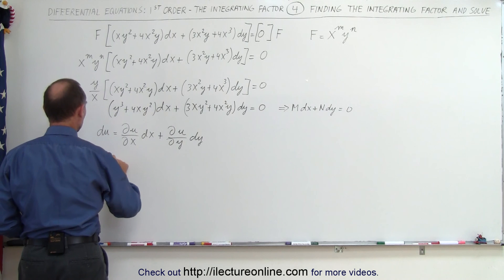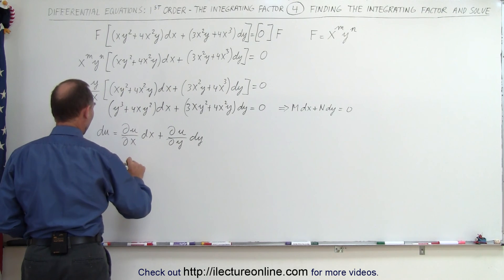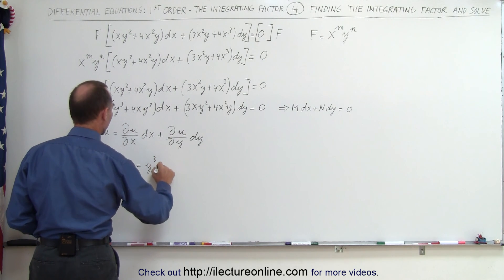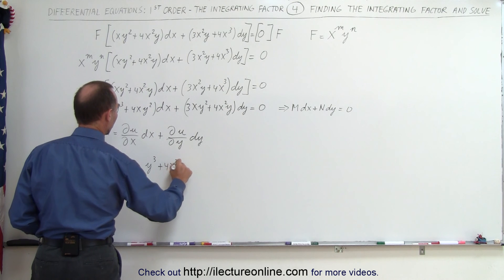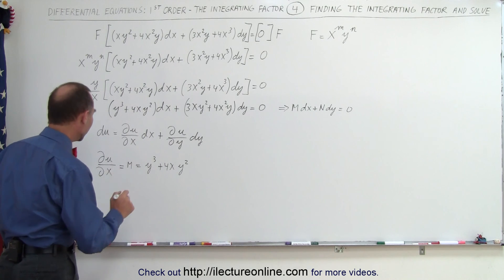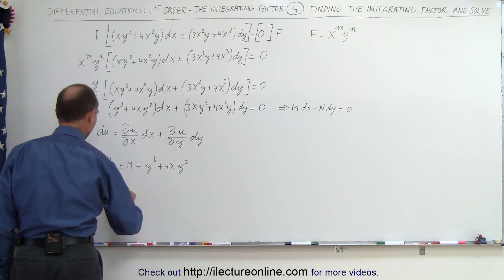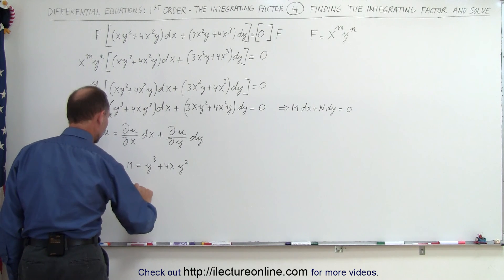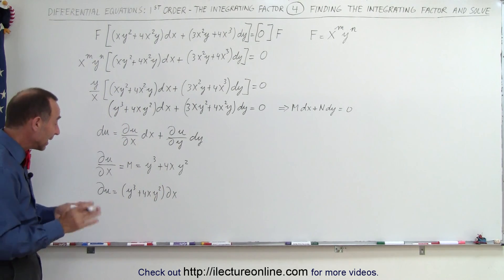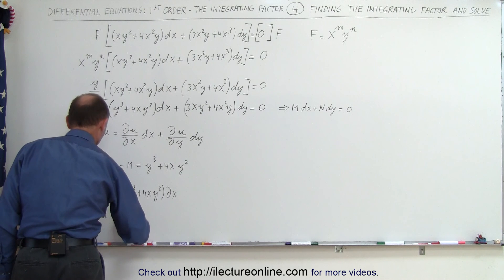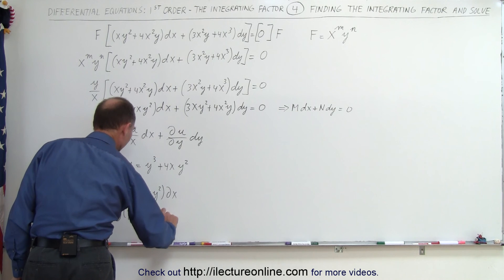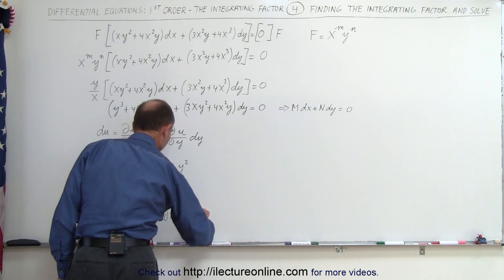We can say that ∂u/∂x equals M, and since M equals y³ + 4xy², we can therefore say that the partial of u equals (y³ + 4xy²) dx, which means if we now integrate both sides, we get u equal to the integral of (y³ + 4xy²) with respect to x, plus a function of y.